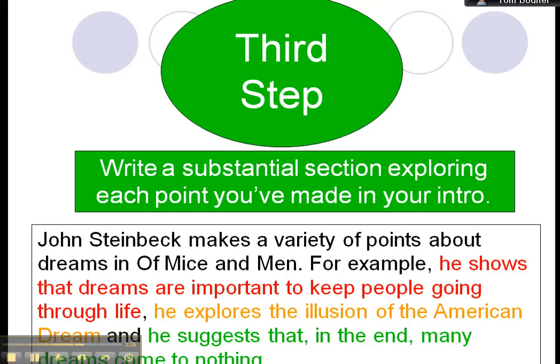Your third step, then, is simply to take each of those points, your red, your orange, and your green, and to write a substantial section exploring each of the points that you've made. This is where you bring in your PEE, your examples, your analysis, your consideration of language, all of those sorts of things you know that you need to do, your PEE plus, basically.